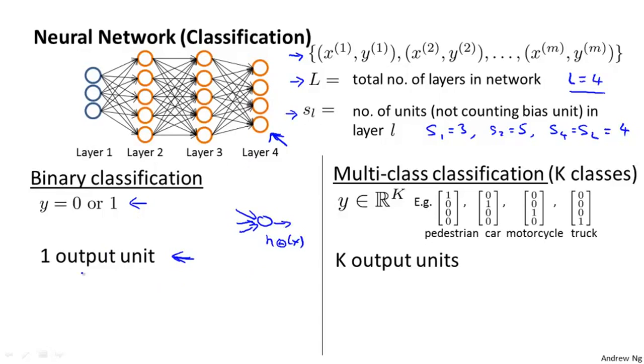And the output of the neural network would be h(x) is going to be a real number. In this case, the number of units we have in the output layer is going to be equal to 1. To simplify notation later, I'm also going to say k equals 1. So you can think of k as also denoting the number of units in the output layer.